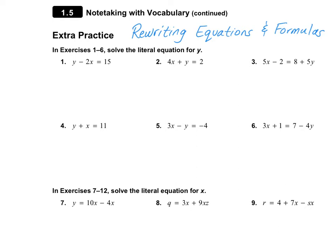Today we're going to start on page 25 of your journals. For numbers 1 through 6, it asks us to solve the literal equation for Y. A literal equation is an equation with two or more variables. These first six problems are really important because they will help you when you're graphing lines, which we're going to be doing very soon.